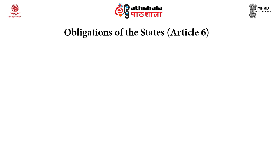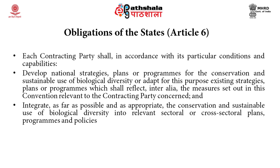The obligations of the states are laid down in Article 6 of the CBD. First, to develop national strategies, plans or programs for the conservation and sustainable use of biological diversity, or adapt existing strategies, plans or programs which shall reflect the measures set out in this Convention relevant to the contracting party concerned. Second, the obligations of the states are to integrate, as far as possible and appropriate, the conservation and sustainable use of biological diversity into relevant sectoral or cross-sectoral plans, programs and policies. The Convention on Biological Diversity has, in various articles, spoken about cooperation between states to bring about sustainable use of biodiversity.